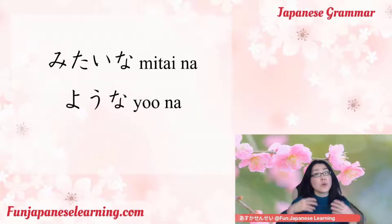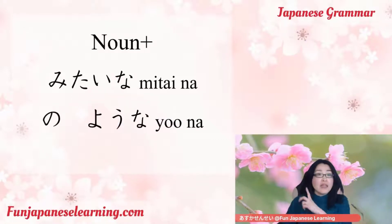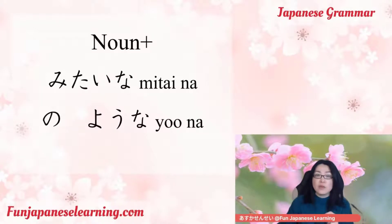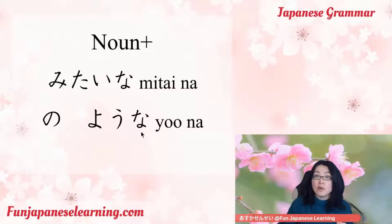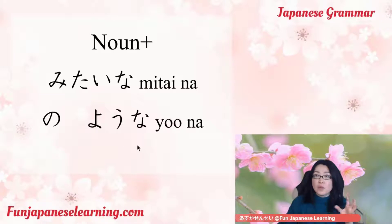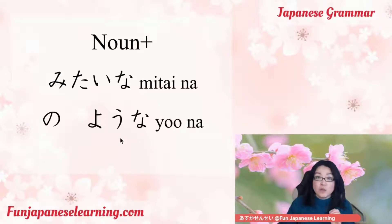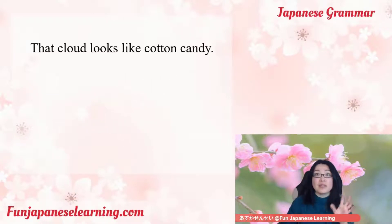When you use these expressions with a noun, we say noun plus mitaina, or noun plus no plus yona. Be careful — you need to use no to link yona to a noun, but with mitaina you don't need no. For example, let's look at how to say 'that cloud looks like cotton candy.'